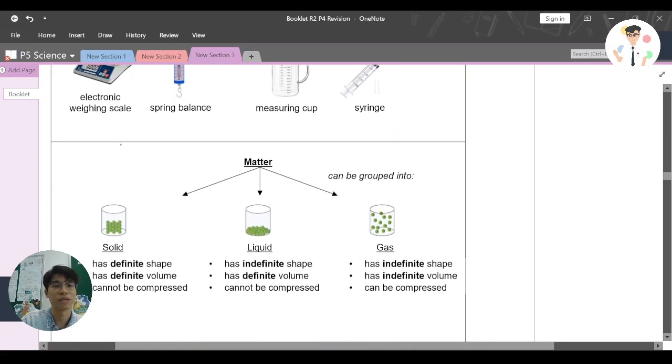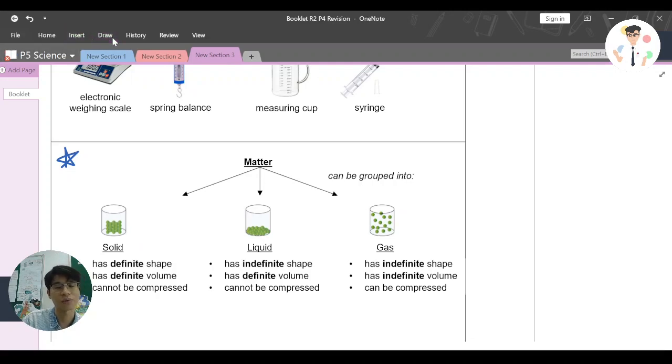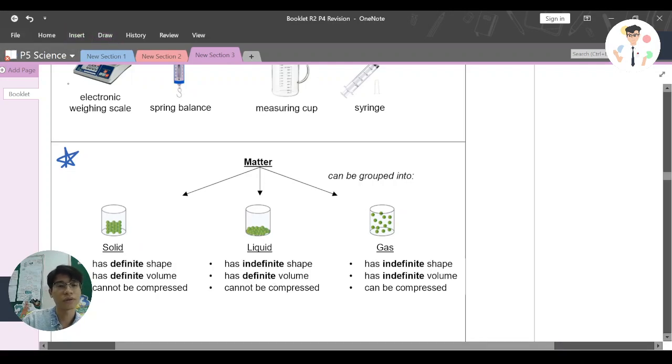Now let's come to something that is really important. Matter can be grouped into three different groupings. The first one is solid, second one is liquid, the third one is gas. Now let's try to understand solid.